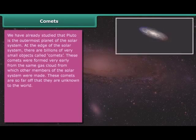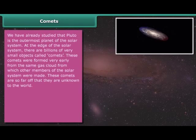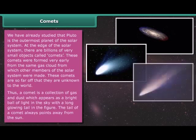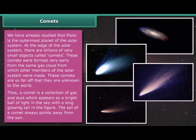At the edge of the solar system, there are billions of very small objects called comets. These comets were formed very early from the same gas cloud from which other members of the solar system were made. A comet is a collection of gas and dust which appears as a bright ball of light in the sky with a long glowing tail. The tail of a comet always points away from the sun.